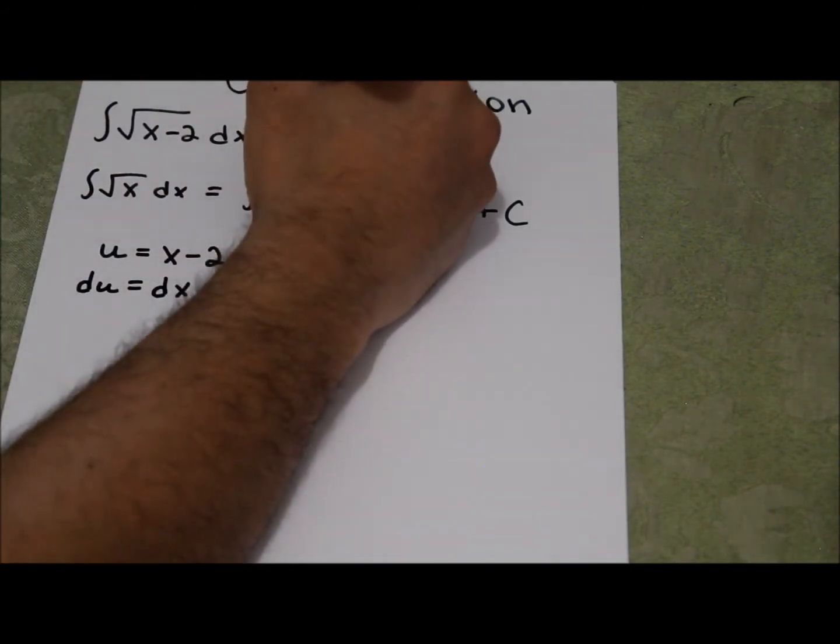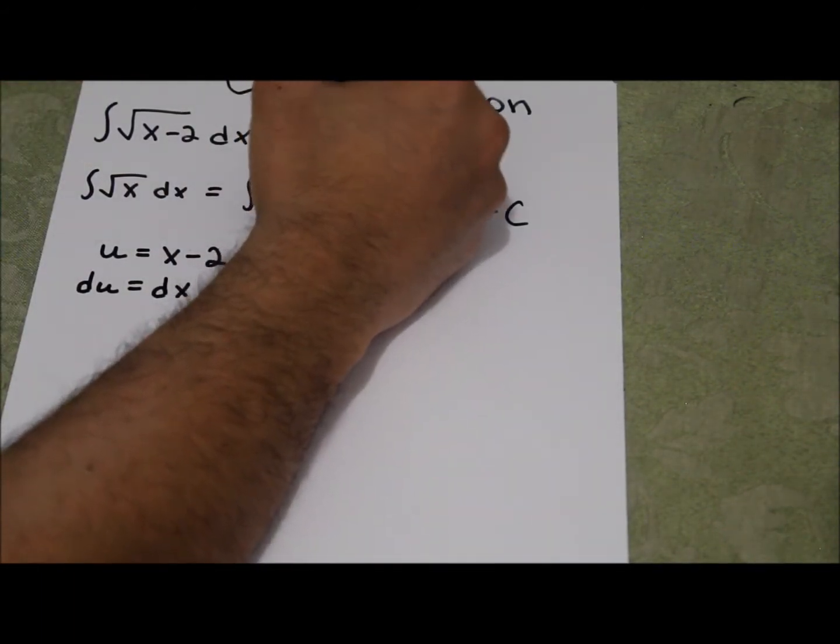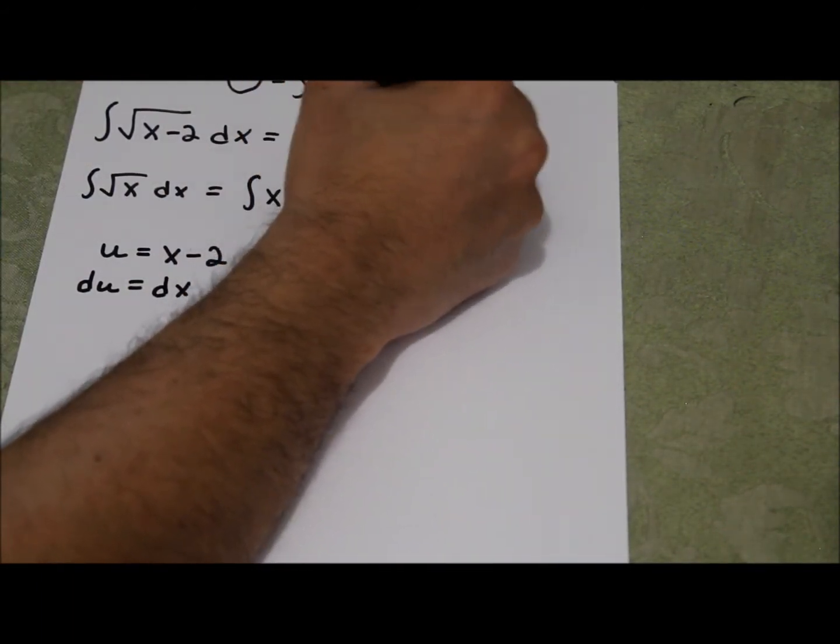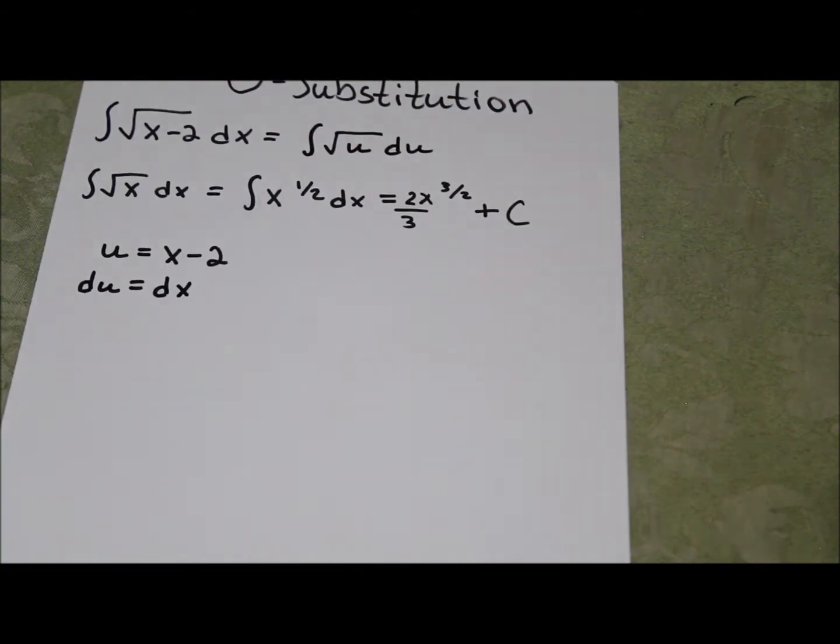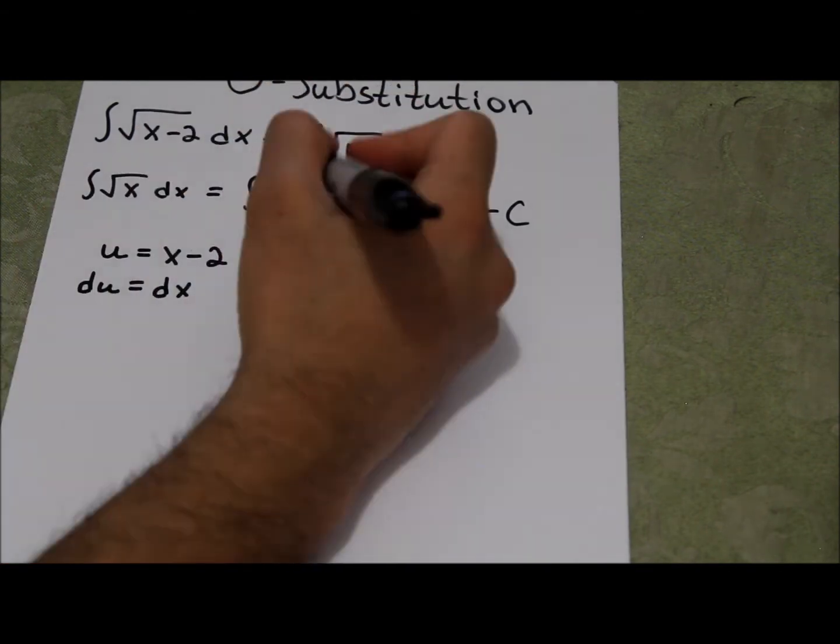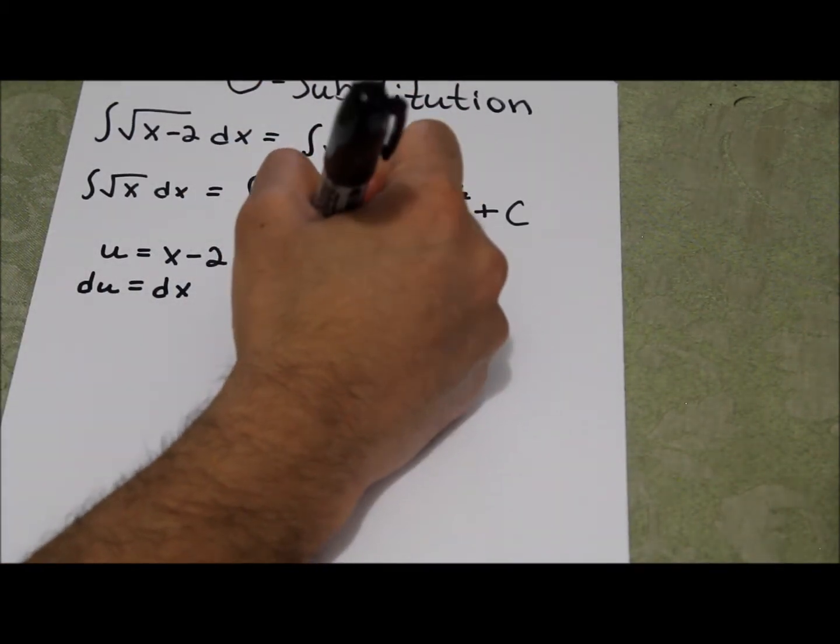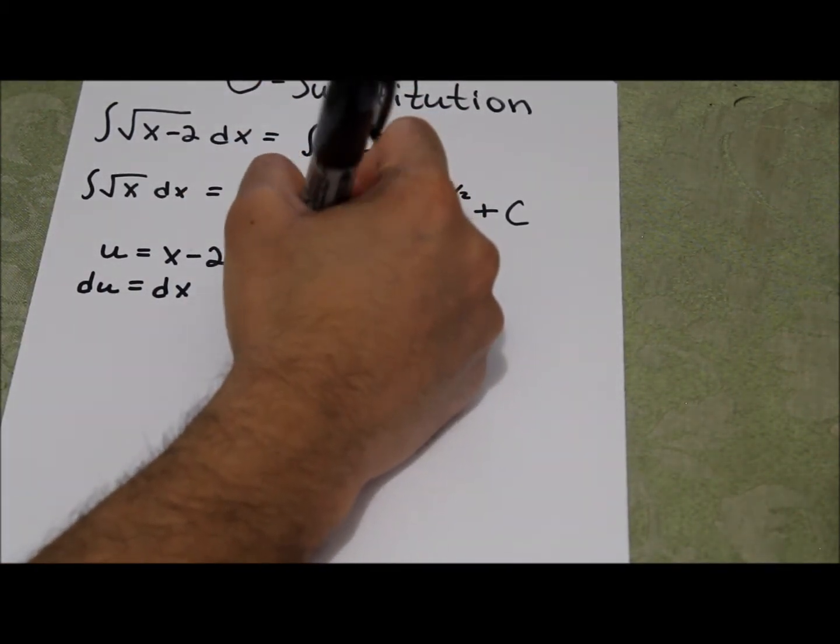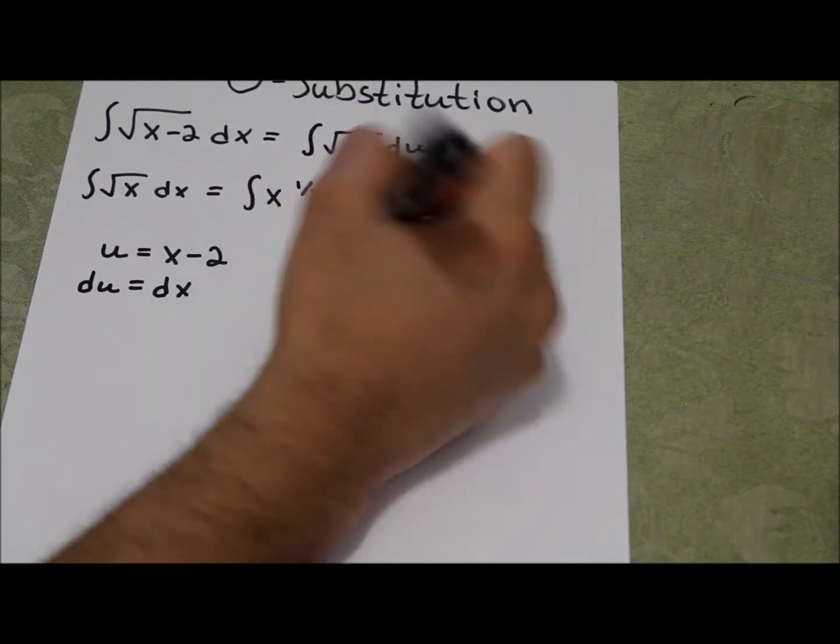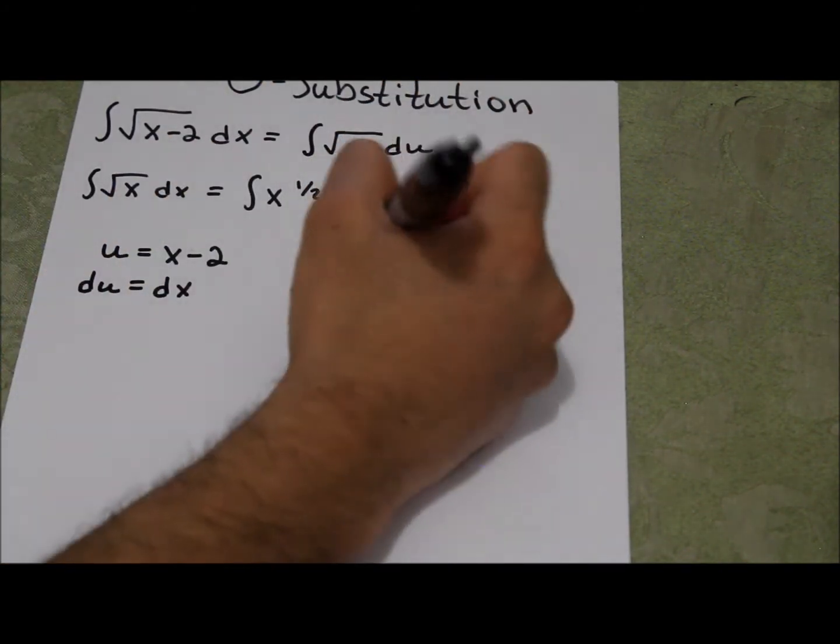Now we can rewrite this problem and have integral of square root of u du. Now this looks a lot like this problem, doesn't it? So what we can do is use the same technique. We can just add 1 to the exponent.